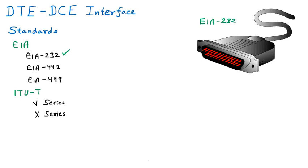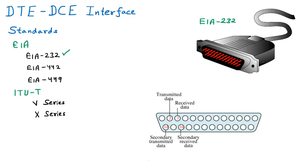In this diagram, you can see that there are many pins, and all the pins have their own function. We are going to discuss all the pins one by one. First, we are discussing the data pins. There are certain pin numbers assigned — you can see pin number 2, pin number 3, pin number 14, and pin number 16.